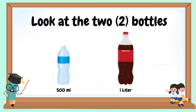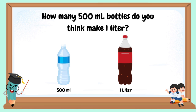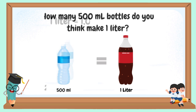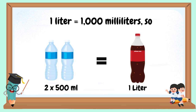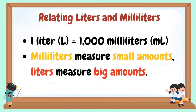Look at the two bottles. Which one has more? How many 500-milliliter bottles do you think make one liter? One liter equals 1,000 milliliters, so two times 500 milliliters equals one liter. A liter is a standard unit used to measure larger amounts of liquid, like pitchers, water jugs, and big bottles. Milliliters measure small amounts; liters measure big amounts.